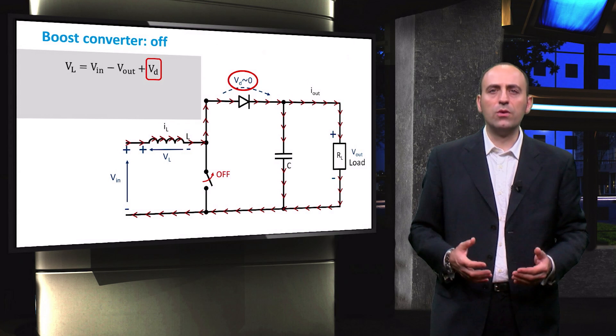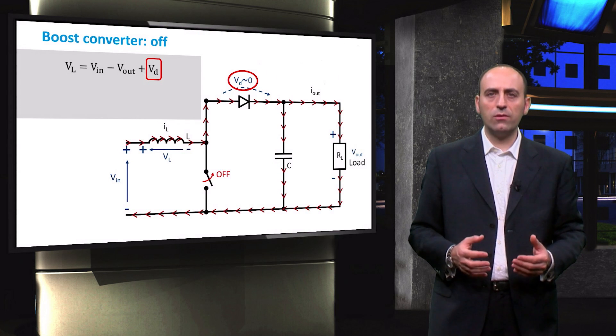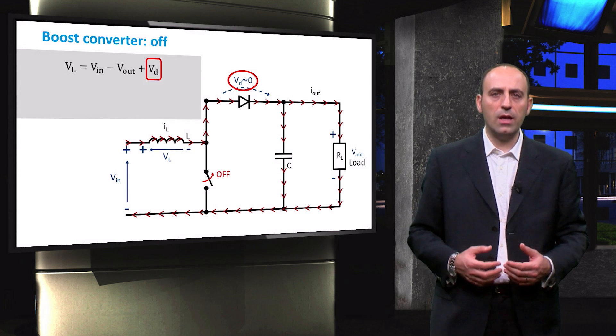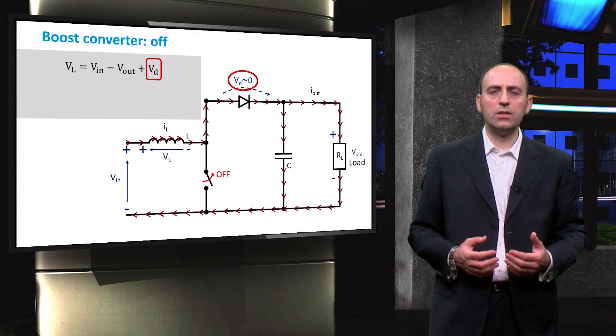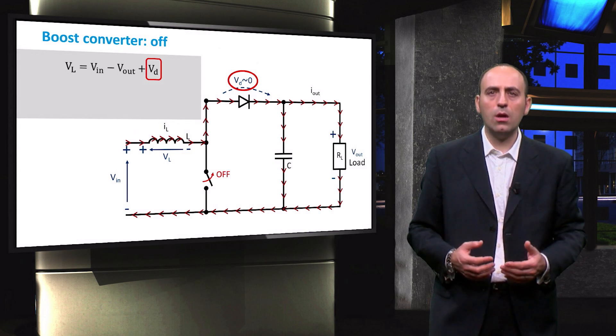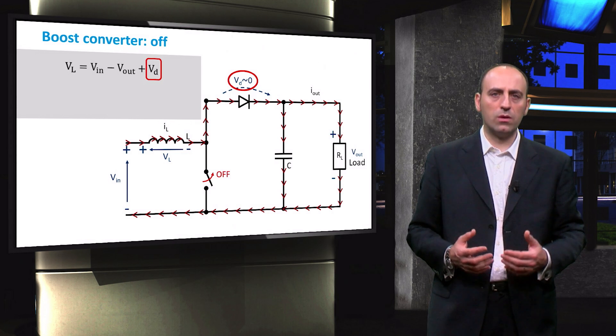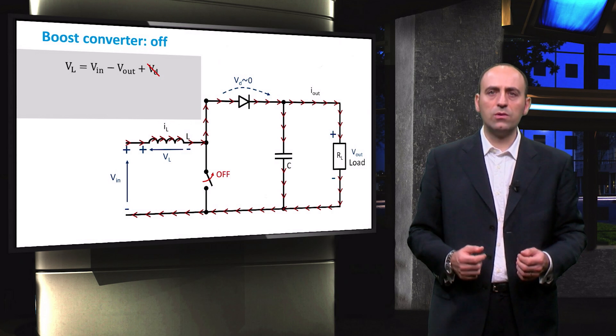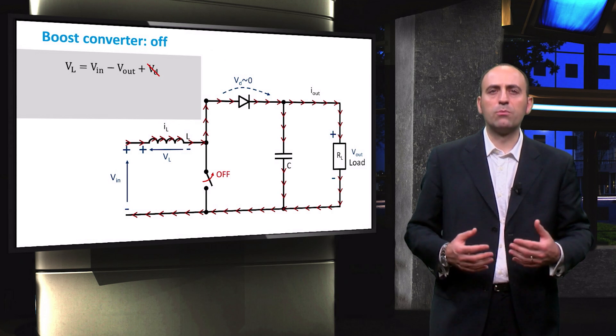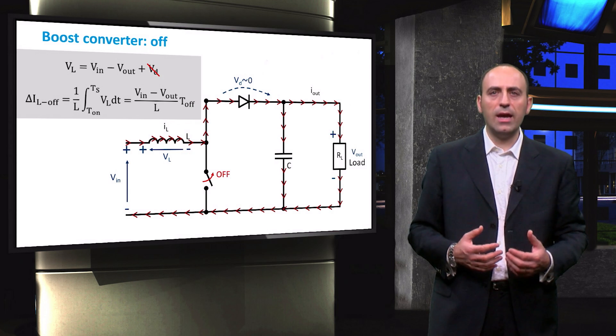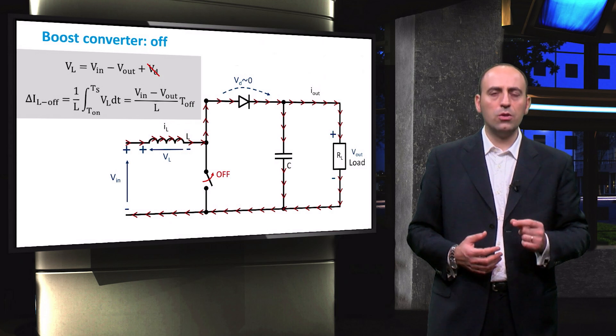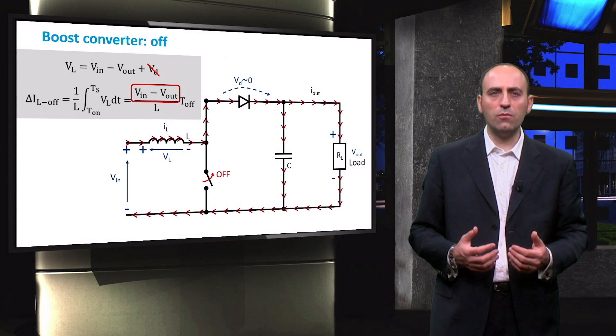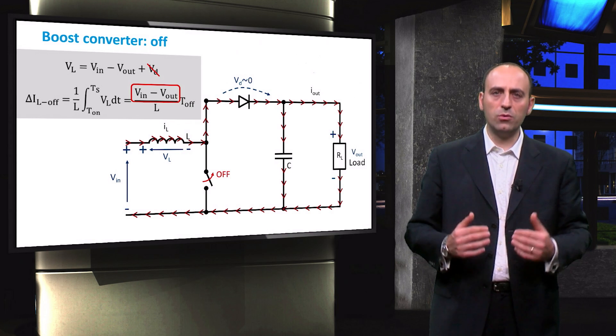However, like for the buck converter, the voltage across the diode requires a very small bias to start conducting the current, and most of the times this voltage is considered to be negligible because it is in the range of 0.7 volts or even less. Hence, only Vin minus Vout remains with which we can express the variation in current, and notice that it decreases during the OFF mode. In fact, the numerator is negative because the output voltage is higher than the input voltage.